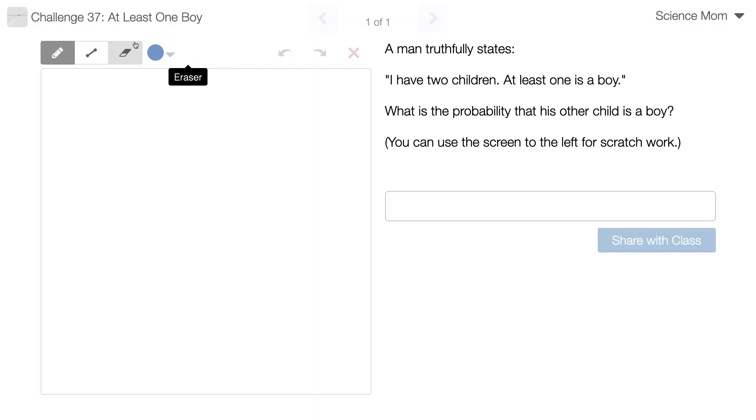A man truthfully states, I have two children, at least one is a boy. What is the probability that his other child is a boy?